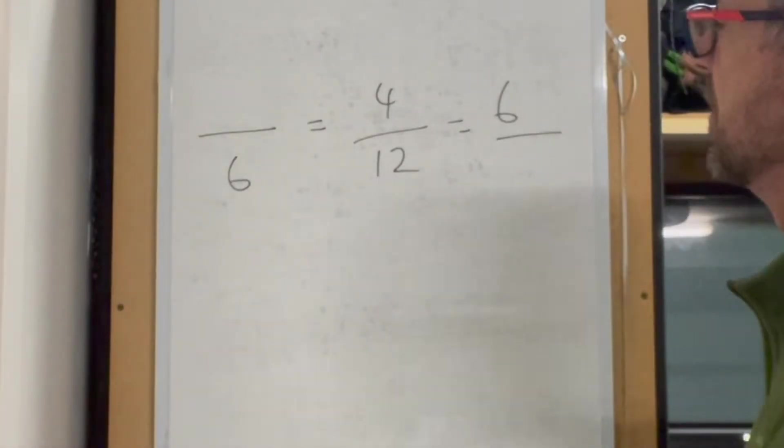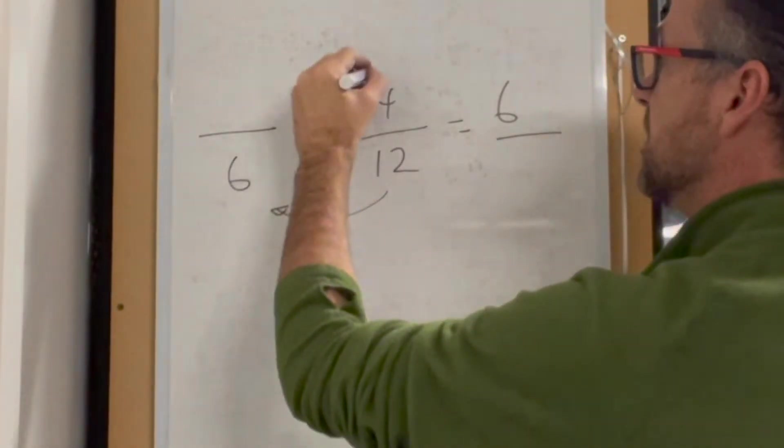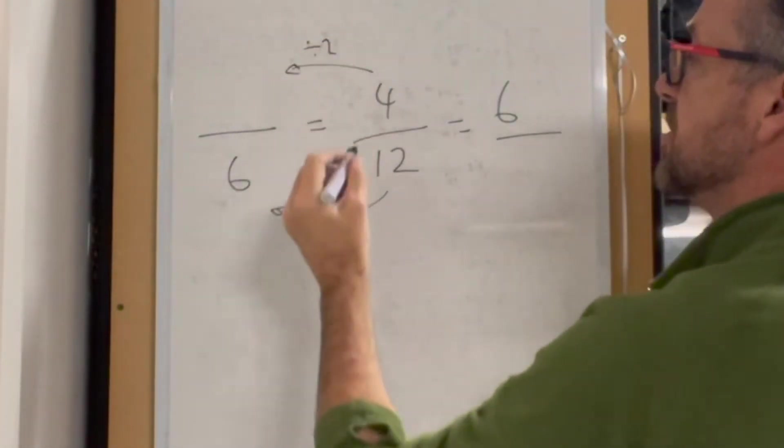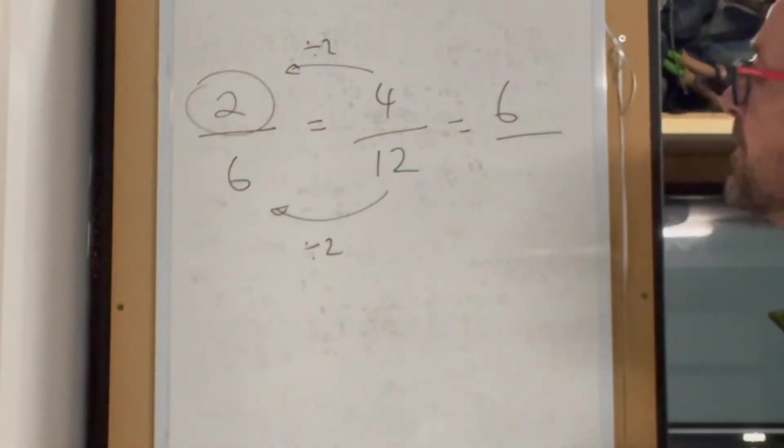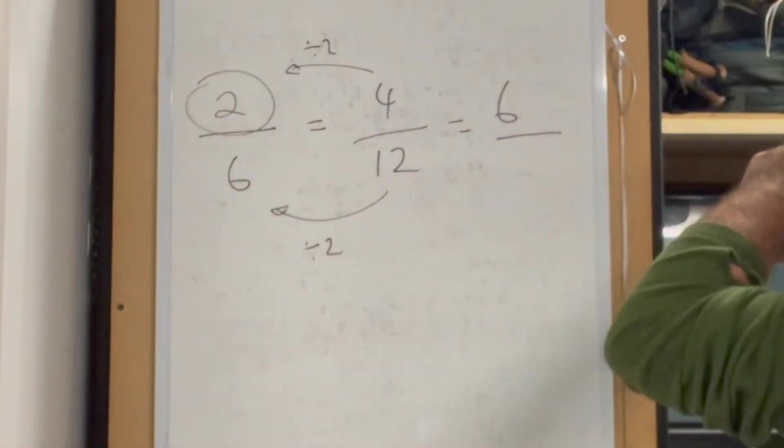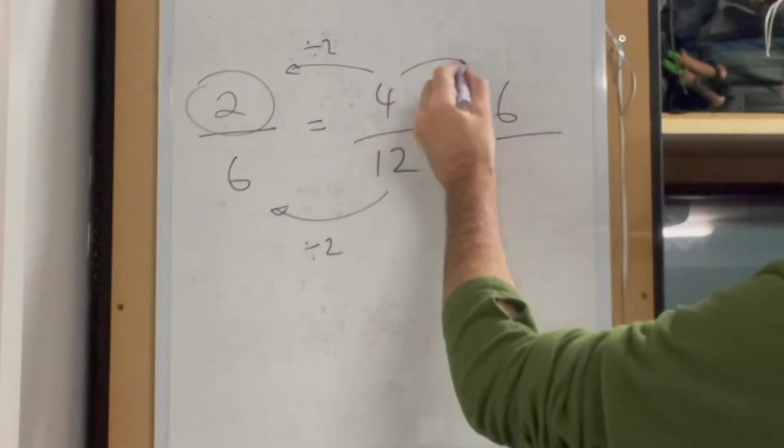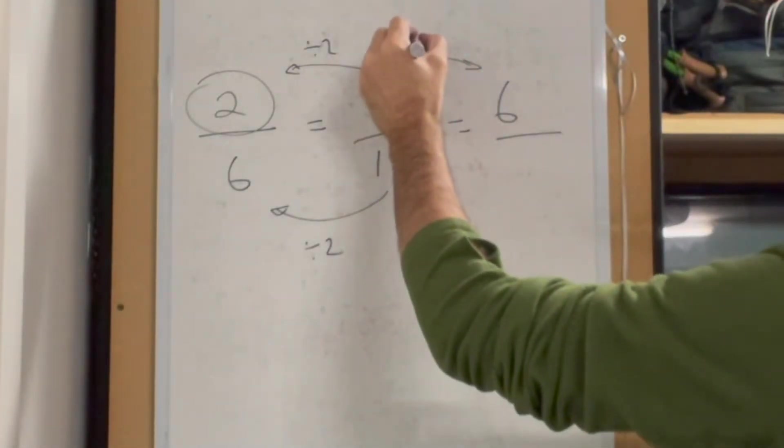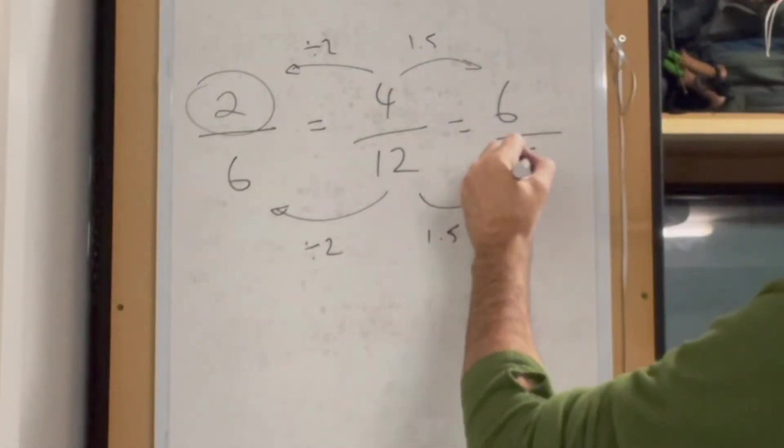Here we go from 12 back to 6 by dividing by 2, so going back that way is also divide by 2. 4 divided by 2 is 2. For equivalent fractions, to go from 4 to 6 you multiply by 1.5, so multiply by 1.5 and you get 18. 6 over 18.